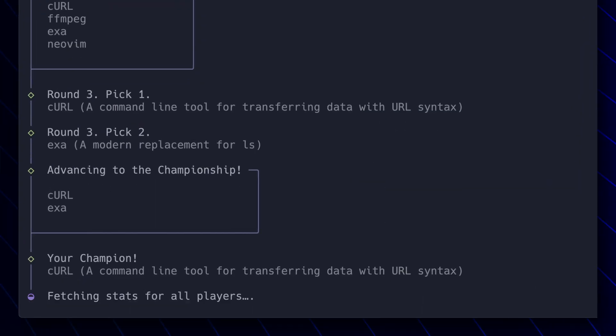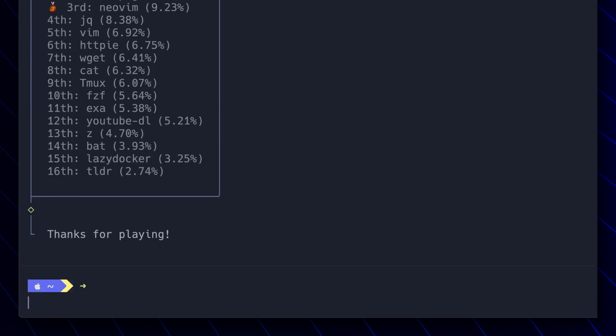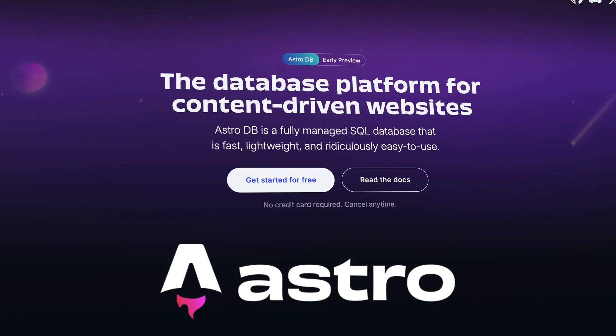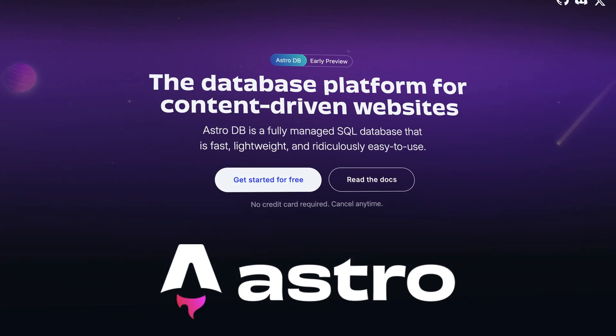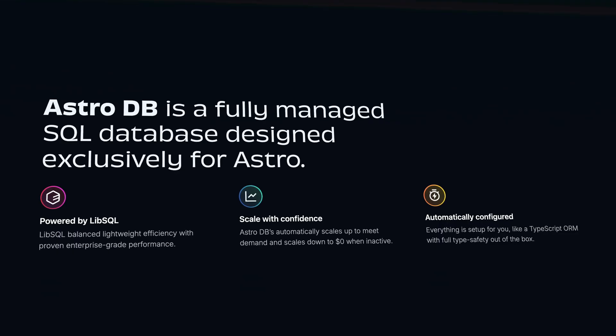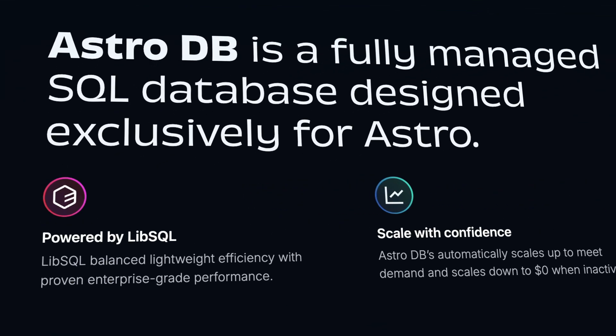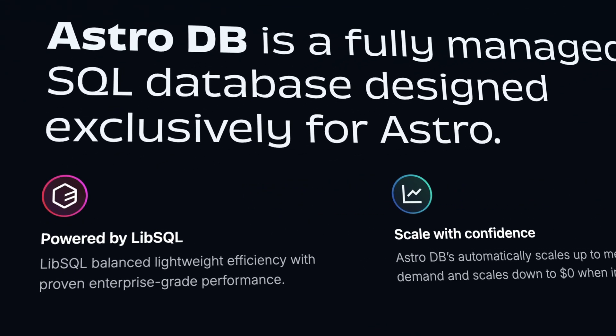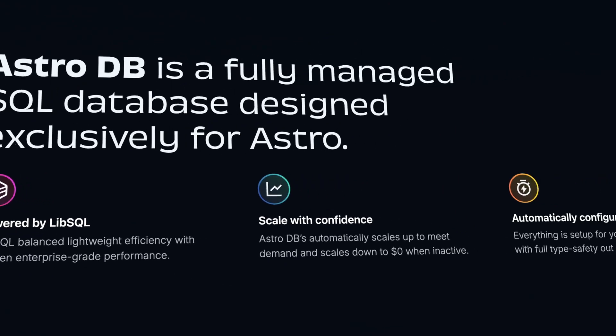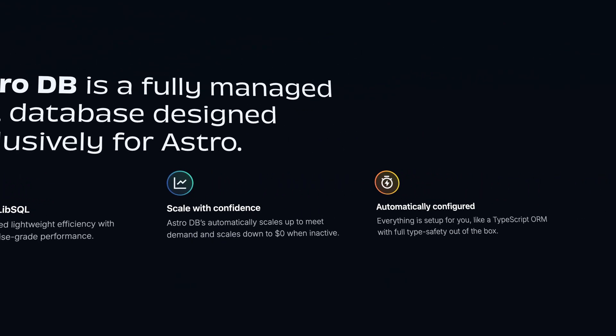So that was the basic CLI interaction, but now I needed to submit this to a database. As I was building this out, Astro — my favorite JavaScript framework — came out with a database solution called AstroDB in early preview. It's an SQLite distributed database, and I thought it would work really well for something like this.